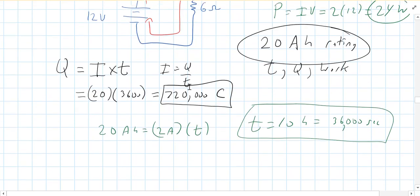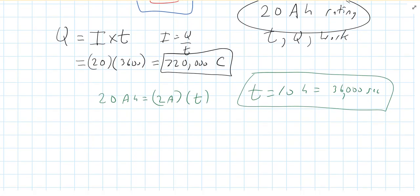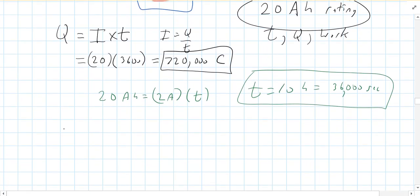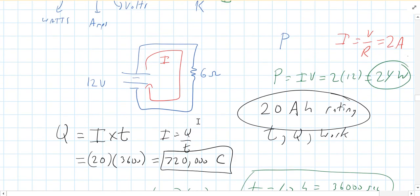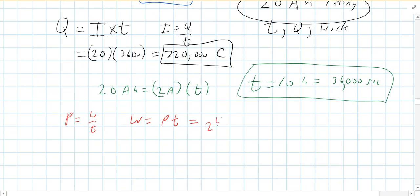Now the work done by the battery, there's a couple ways to do this. One is to use power is work divided by time, so work is power times time. The power is 24 watts, and the time is 36,000 seconds. And if you multiply those out, I get a big number, 864,000 joules.